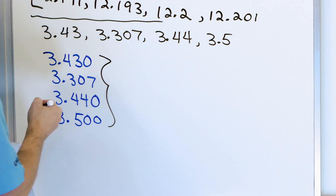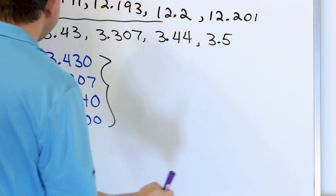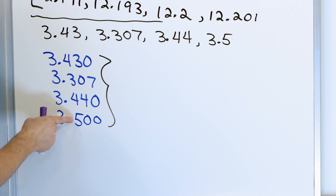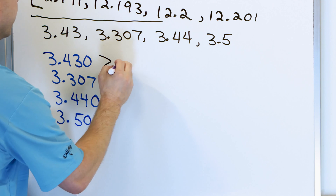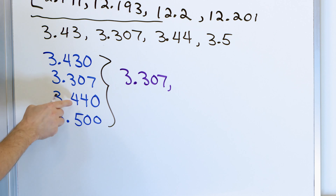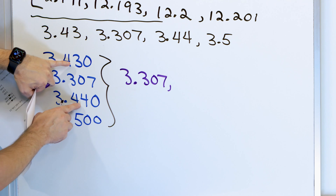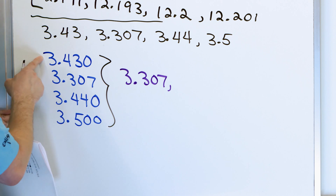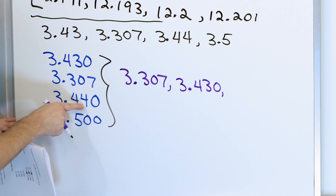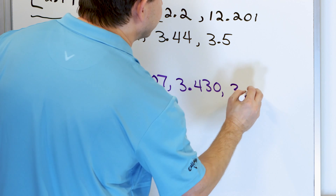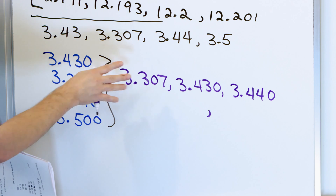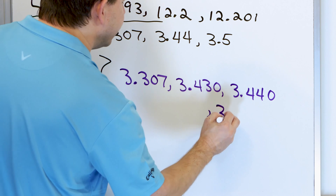Now we write these in order of least to greatest. We first check the whole numbers — they all say 3, all tied. Next, for a tiebreaker, we look in the tenths column: 4, 3, 4, 5. Three is the smallest, so 3.307 is the smallest number. For the next ones, we have a tie between two 4s. We look for a tiebreaker in the hundredths: 3 compared to 4. Three is smaller, so 3.430 comes next, then 3.440. The five is the next biggest, so 3.500 is last.